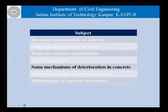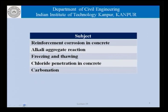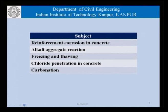We have talked about some of the mechanisms of deterioration that we see in concrete structures. Some of those are listed here: reinforcement corrosion, alkali aggregate reaction, freezing and thawing, chloride penetration in concrete, carbonation — both these being the reasons for reinforcement corrosion.